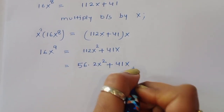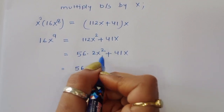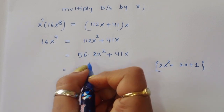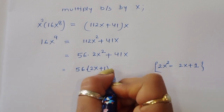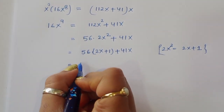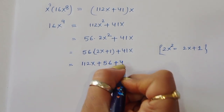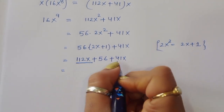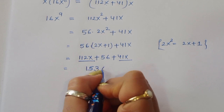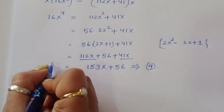Since 2x squared equals 2x plus 1 from equation 2, we have x squared equals (2x plus 1)/2. So 112x squared equals 56 times 2x squared equals 56 times (2x plus 1) equals 112x plus 56. Therefore 16x power 9 equals 112x plus 56 plus 41x, which gives 16x power 9 equals 153x plus 56. This is equation number 4.